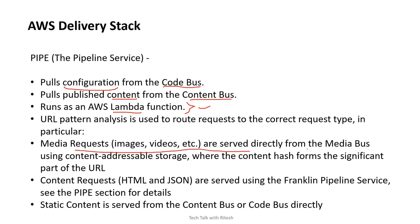Media requests — images — are served directly from the media bus using content-addressable storage. If you're familiar with S3, when we upload documents or objects to S3, it creates an addressable URL. That is how we can form a URL for a particular asset and access it. Content requests are served using the Franklin pipeline services, and static content comes from the content bus or code bus directly.